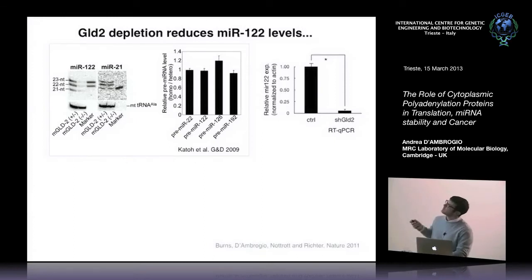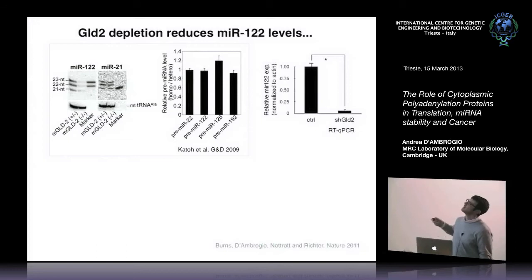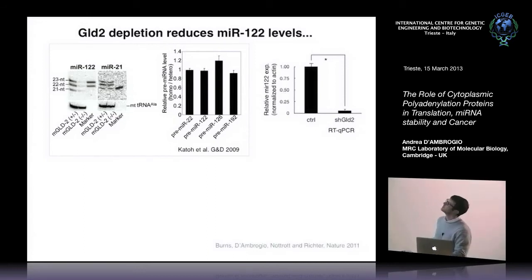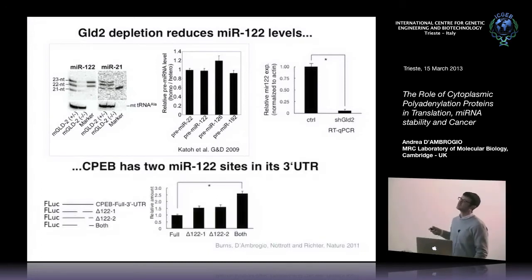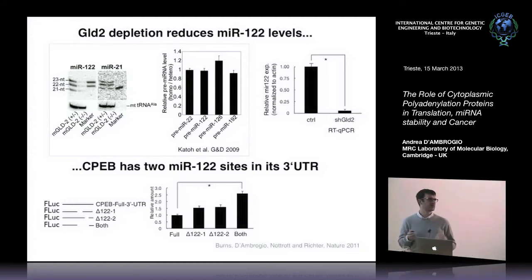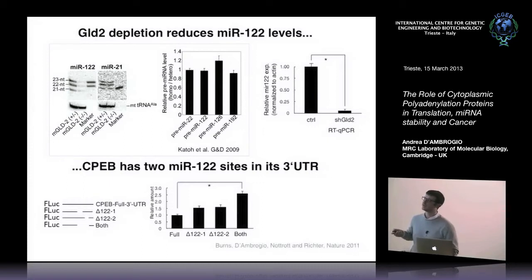The same happened in our cells. We repeated the experiments from that paper and confirmed the results: short hairpin GOLD2 cells have much less miR-122 compared to the wild type. The connecting point was that CPEB has two miR-122 binding sites in its 3' UTR. To study if these are functional, we designed a construct with luciferase appended with the full CPEB 3' UTR — comprising both miR-122 binding sites — and made deletions of one, the other, or both.